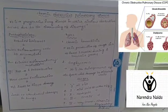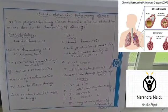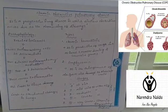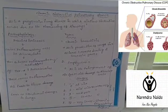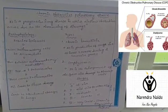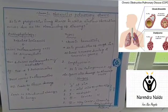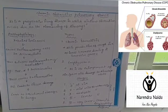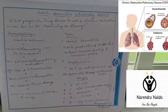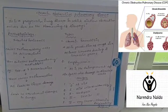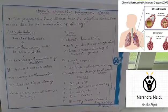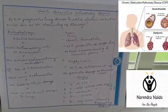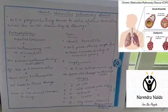The second type is emphysema, which is the enlargement of air spaces in the lungs due to damage of the alveolar walls.